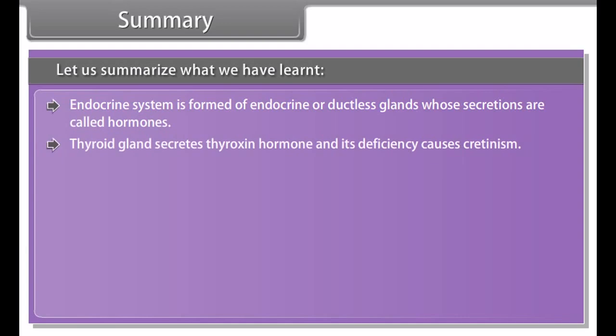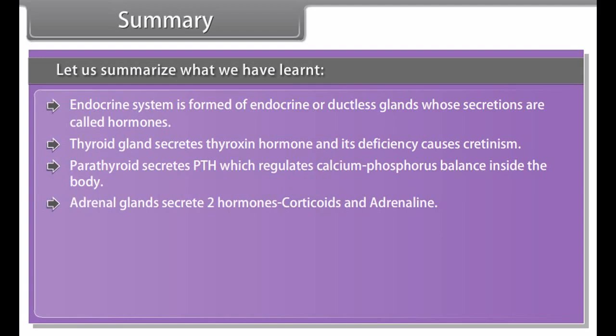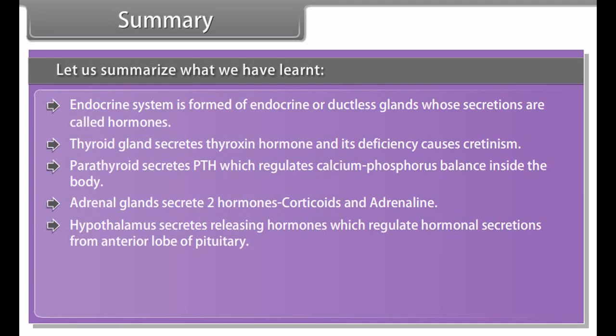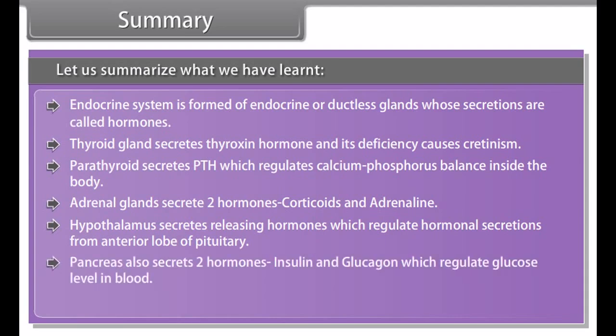Thyroid gland secretes thyroxine hormone and its deficiency causes cretinism. Parathyroid secretes PTH which regulates calcium-phosphorus balance inside the body. Adrenal glands secrete two hormones: corticoids and adrenaline. Hypothalamus secretes releasing hormones which regulate hormonal secretions from anterior lobe of pituitary. Pancreas also secretes two hormones insulin and glucagon which regulate glucose level in blood. Testes secrete testosterone and ovaries secrete estrogen and progesterone.